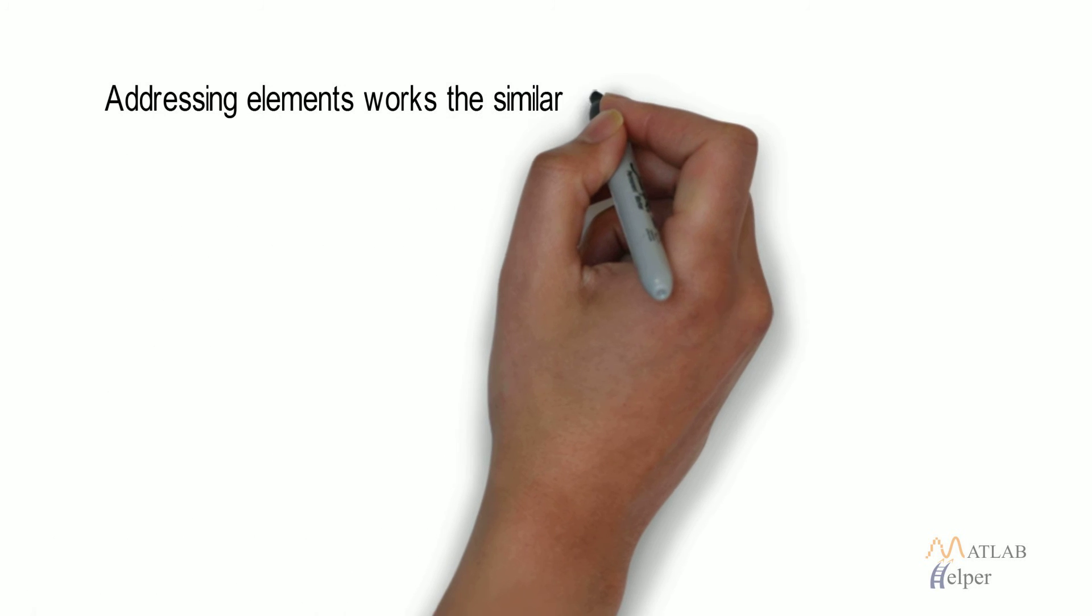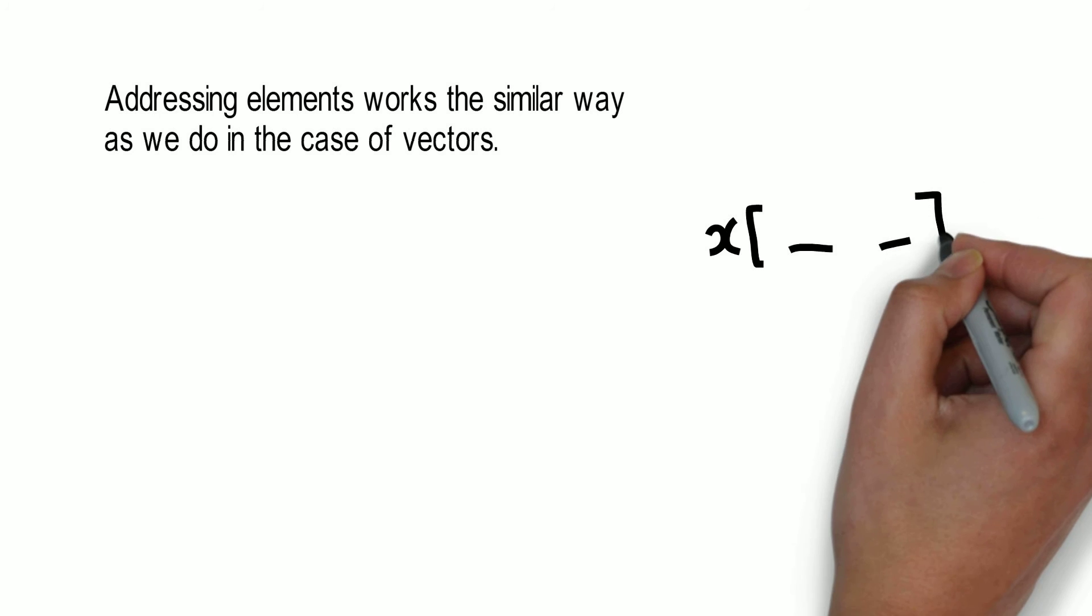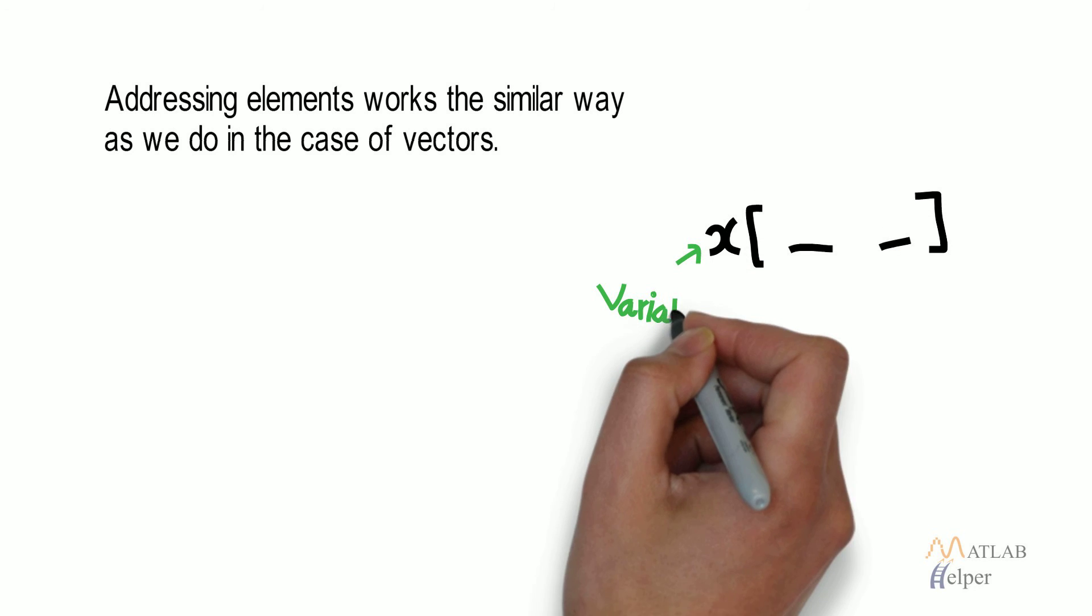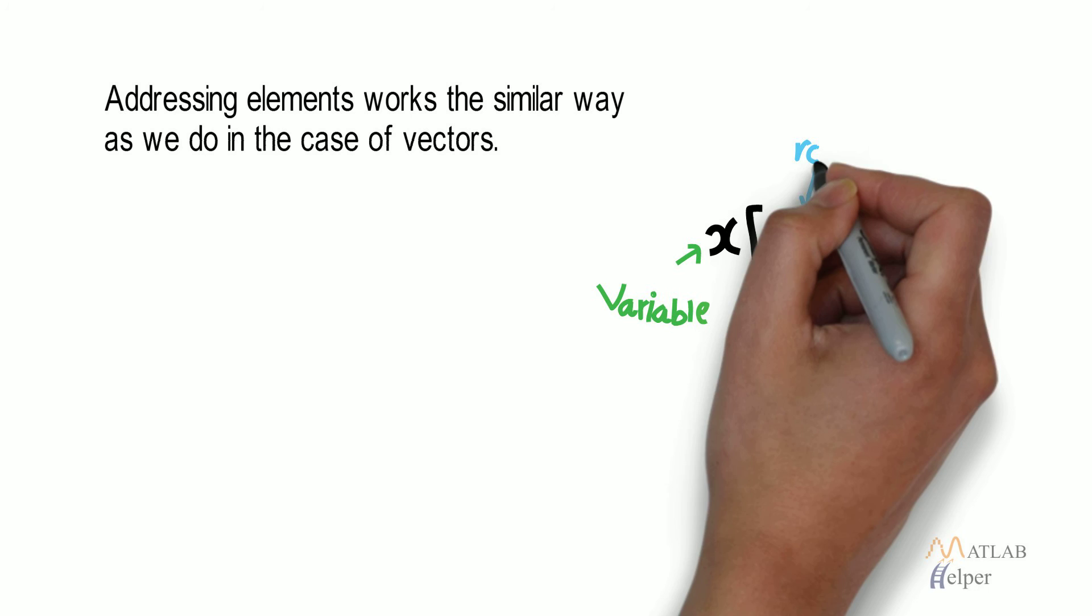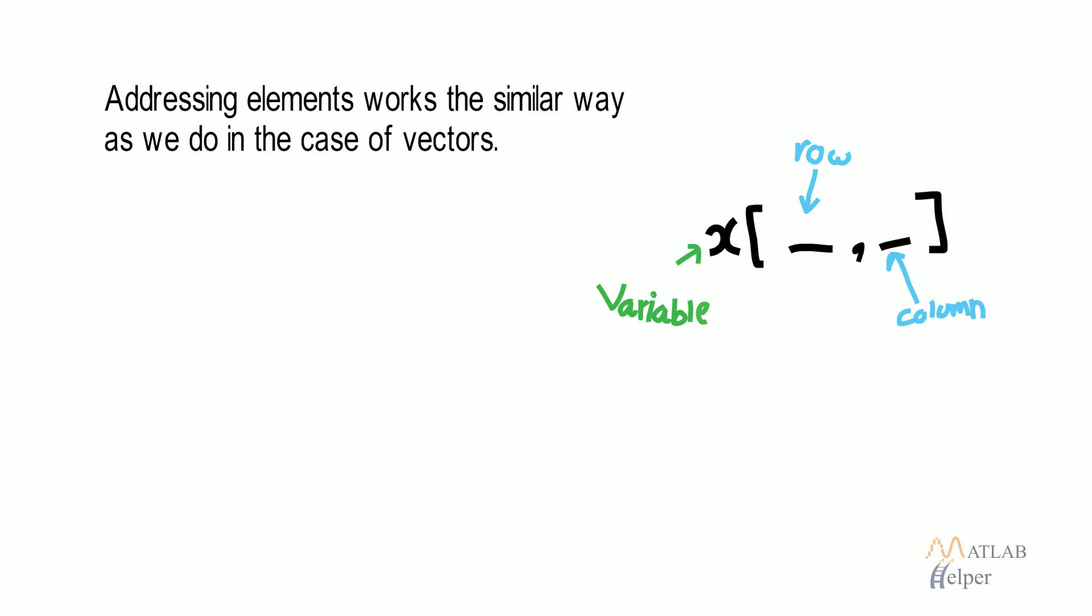Addressing elements works a similar way as we do in the case of vectors. Round brackets or parentheses are used to index a matrix. But the index of matrix consists of two numbers: the column number and the row number. That is, row index comma column index.